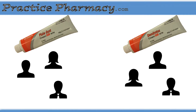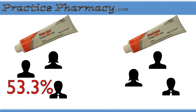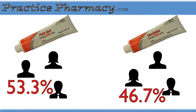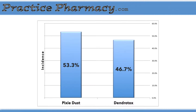In the trials for this imaginary Dendrotox, 53.3% of the control group developed a rash — so the control group didn't receive a real medication — whereas 46.7% of the treatment group developed a rash. Just looking at this data you can see that using the medication seemed to have a positive effect.